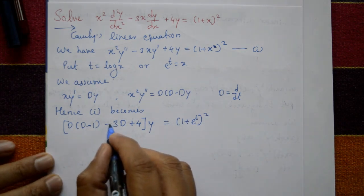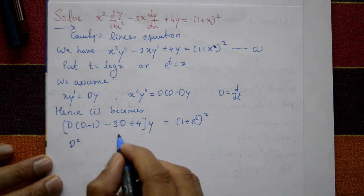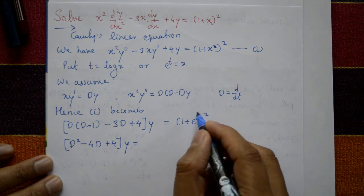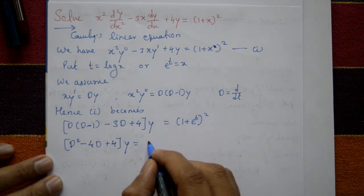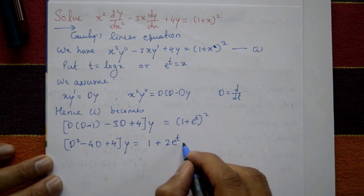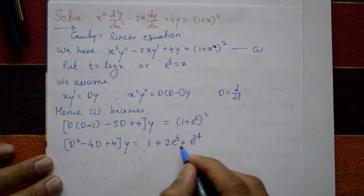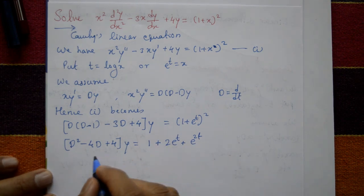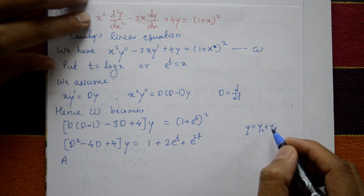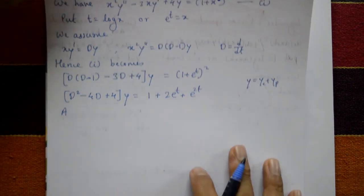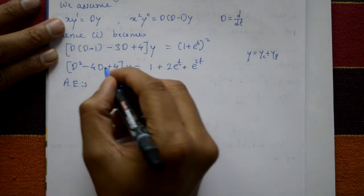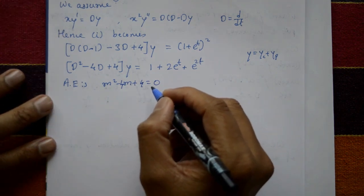Simplifying: D² minus D minus 3D gives D² minus 4D plus 4, so (D² − 4D + 4)y equals 1 plus 2e^t plus e^(2t), using the (a+b)² formula: a² plus 2ab plus b². The general solution equals yc plus yp, the complementary function plus the particular integral.